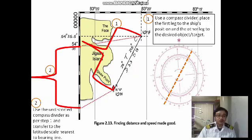Next we need to transfer the undistorted compass divider from step number one and transfer it to the nearest latitude scale. In your Google Classroom, you have already learned that you cannot obtain the distances from the longitude scale because it is equidistant and there will be an error. So you need to get it from the latitude scale, to the nearest, nearest to the bearing line.